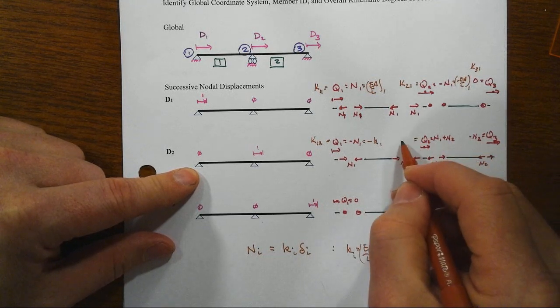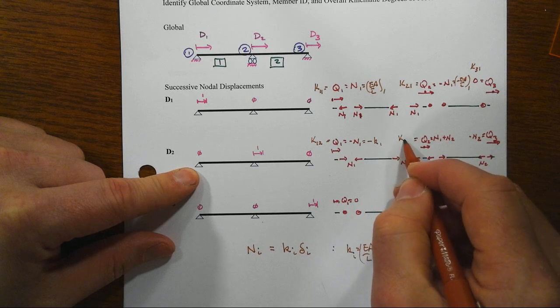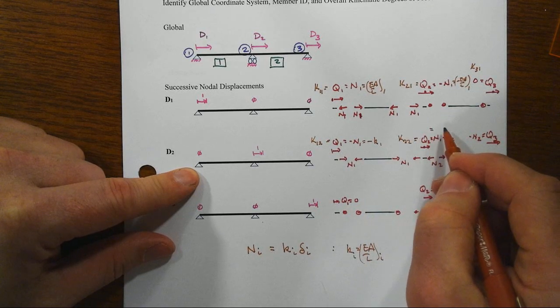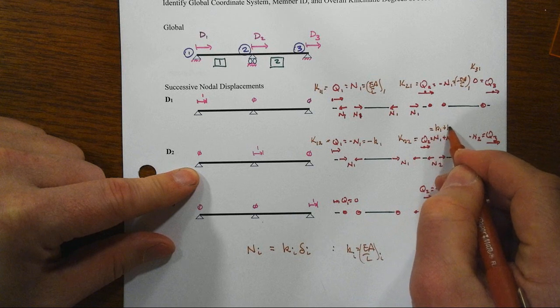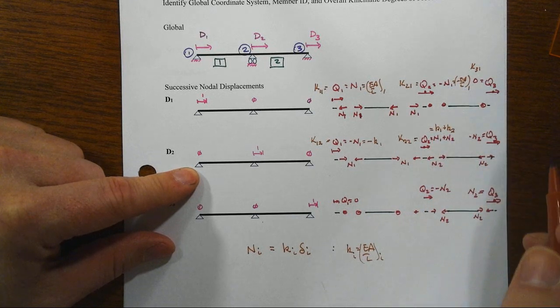And then this one, which globally is K22 will be equal to K1 plus K2.